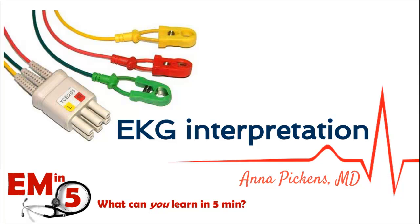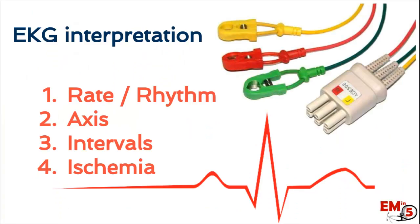Thanks for joining us on EMN5. Today we're going to talk about EKG interpretation. We're going to look at the rate and rhythm, the axis, the intervals, and then for signs of ischemia.